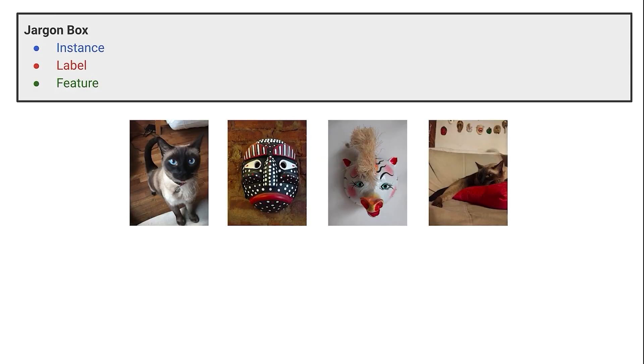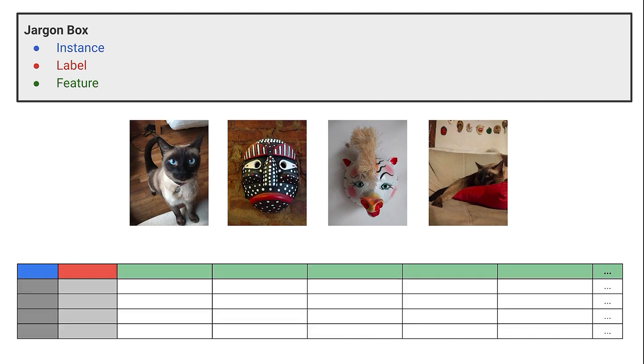When we have a data set in the typical form that we would lay it out if we flattened it, the examples that we're going to learn from are in the rows, and we call them in machine learning instances. Here we have four instances.